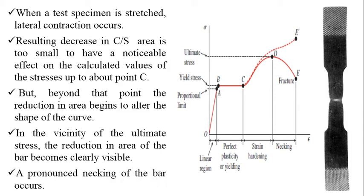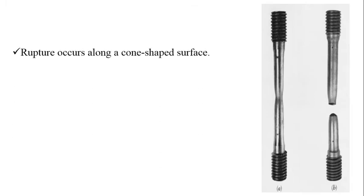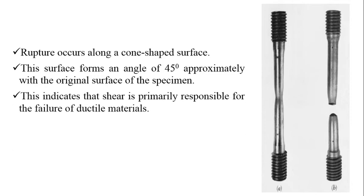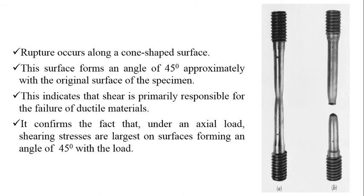A pronounced necking of the bar can be seen, and rupture occurs along a cup-shaped surface forming an angle of approximately 45 degrees with the original surface of the specimen. This clearly indicates that shear is primarily responsible for the failure of ductile materials — it confirms that under an axial load, shearing stresses are largest on surfaces forming a 45-degree angle with the load. The fractured surfaces form what is known as a cup-and-cone fracture.